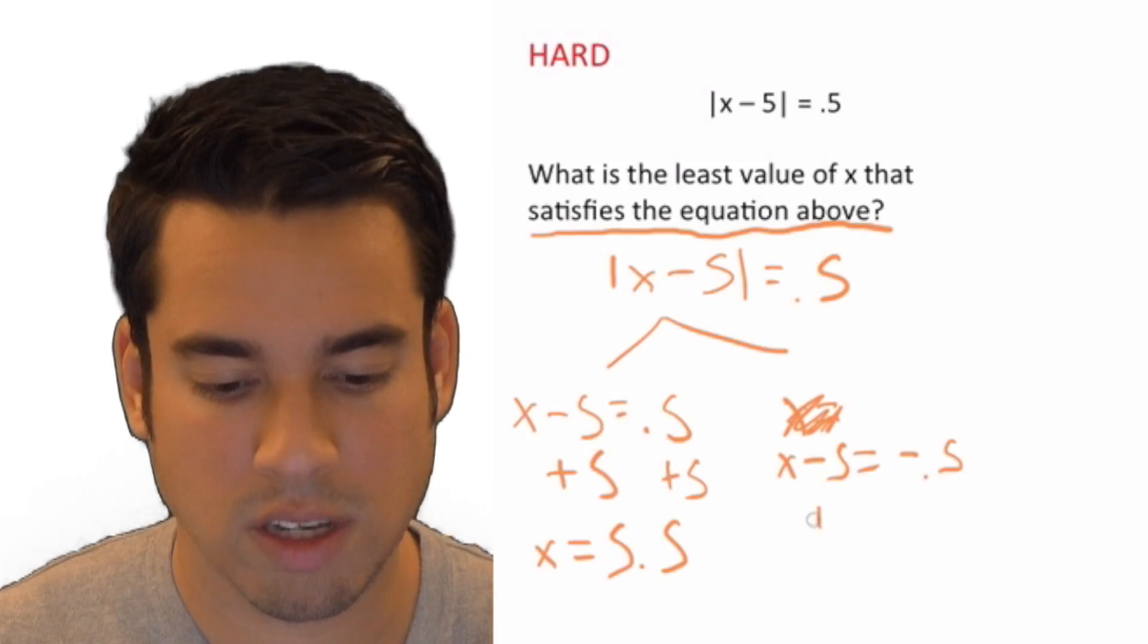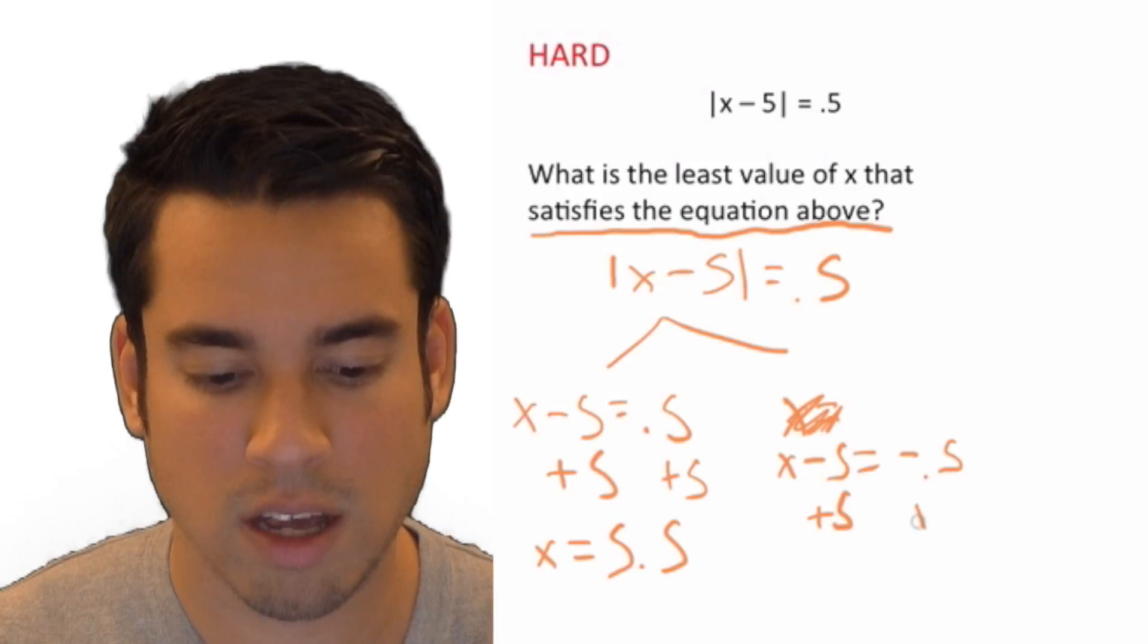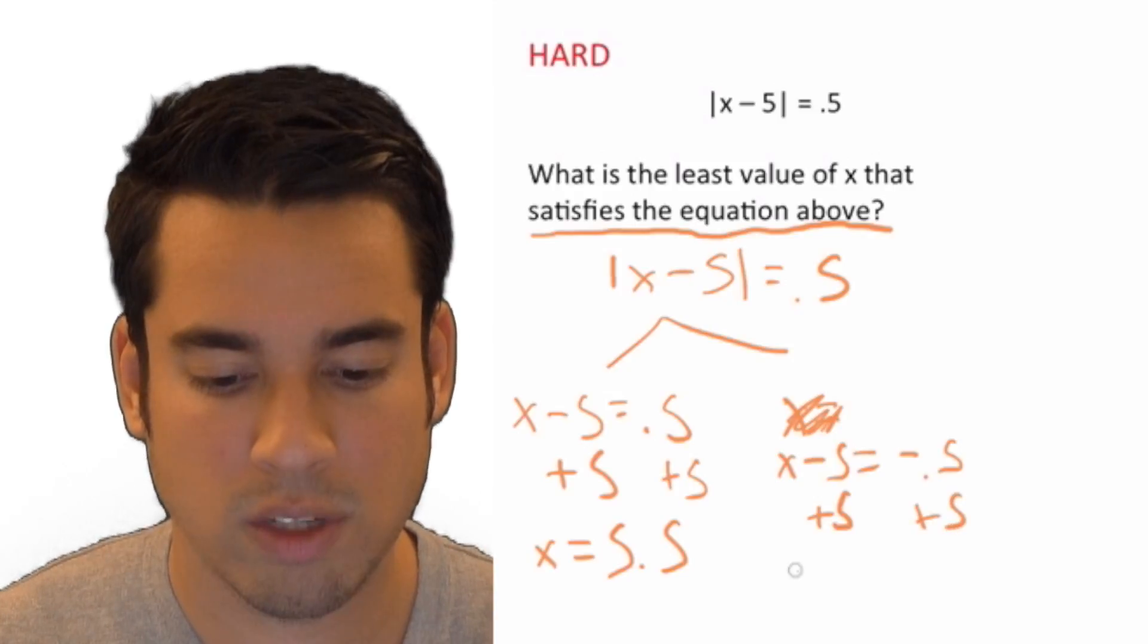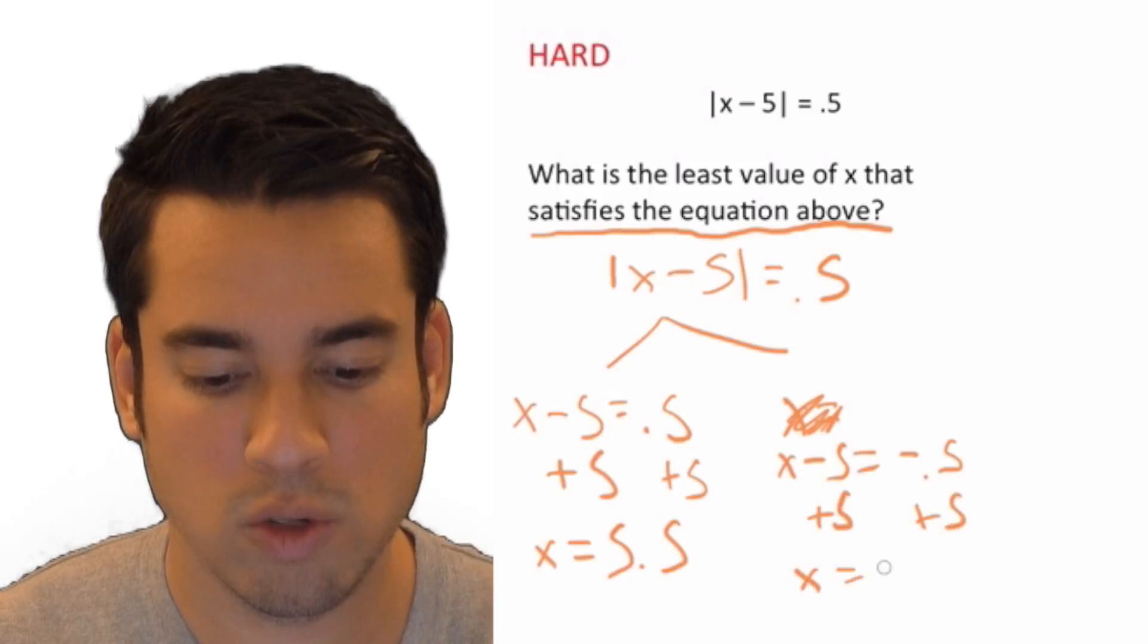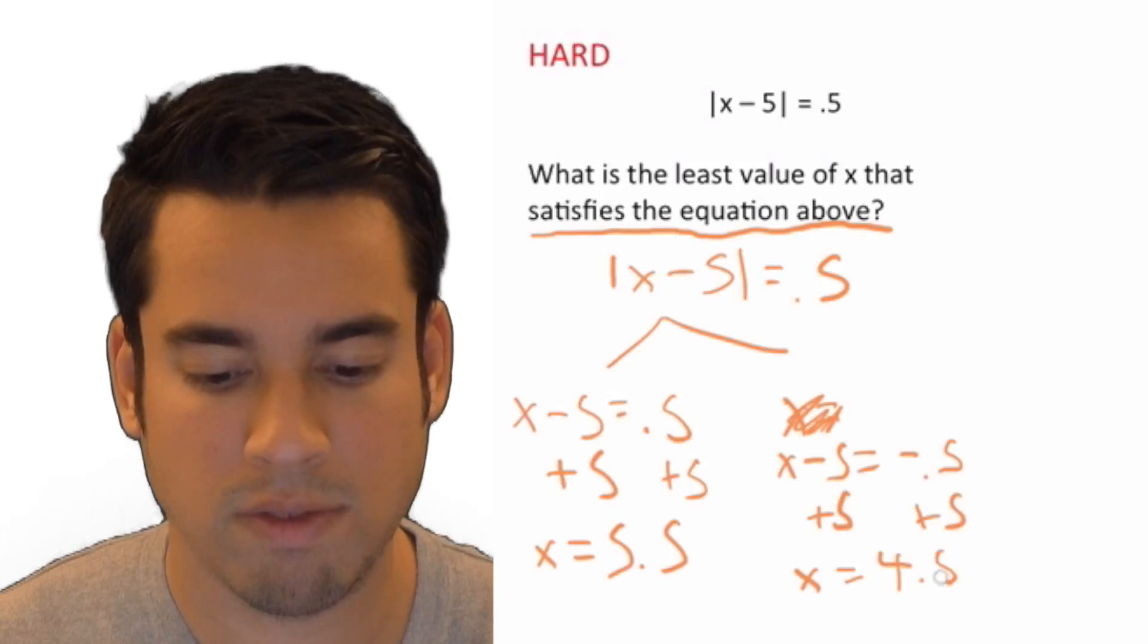The next one we are going to do the same thing, add 5 to both sides. And now we're going to get x equals 4.5.